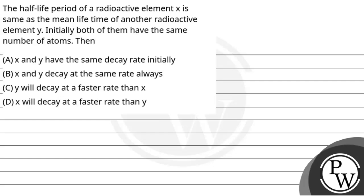Hello, let's see the question. The question states that the half-life period of a radioactive element X is the same as the mean lifetime of another radioactive element Y. Initially both of them have the same number of atoms. The options are: A) X and Y have the same decay rate initially; B) X and Y decay at the same rate always; C) Y will decay at a faster rate than X; D) X will decay at a faster rate than Y.